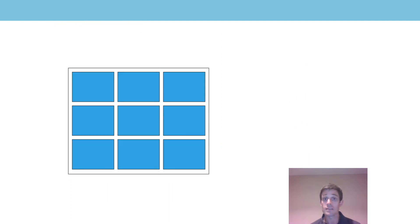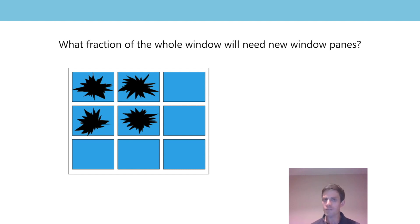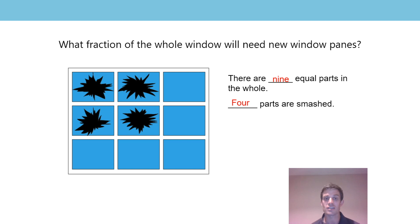Let's look at this next problem together. Carly was playing football and accidentally broke some panes of glass in a window. I want to know what fraction of the whole window will need new window panes. Why don't you have a quick think and whisper it to someone. Let's go through it: there are nine equal parts in the whole, and four parts are smashed, so that means four-ninths is smashed.